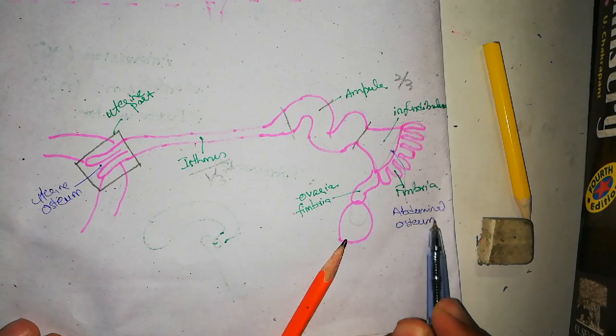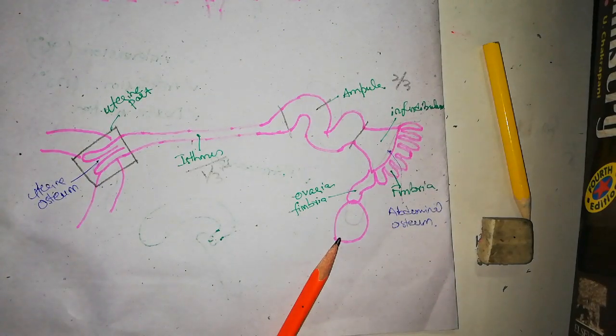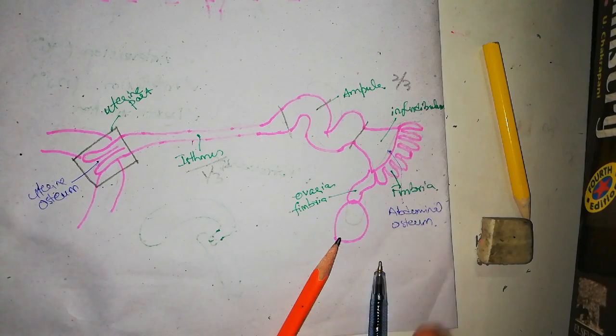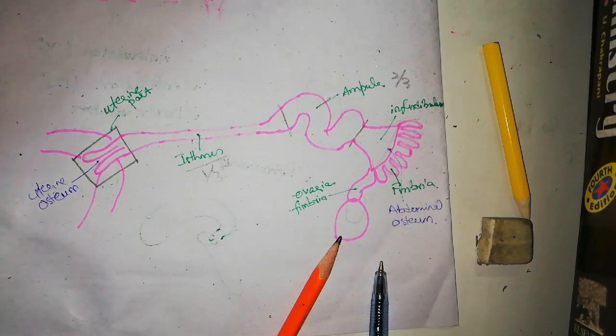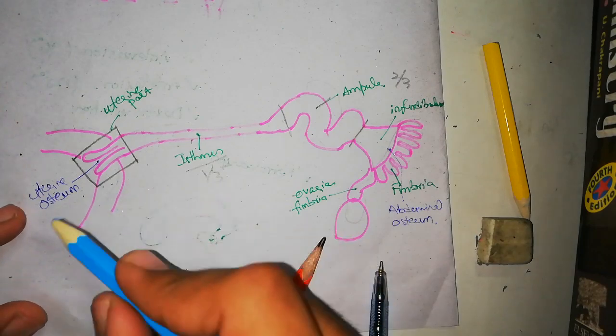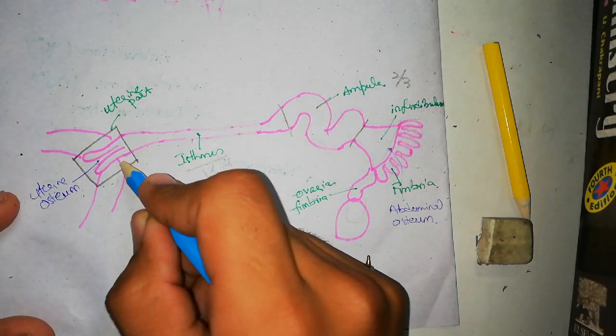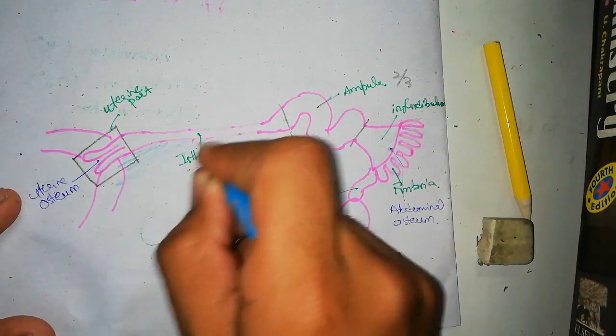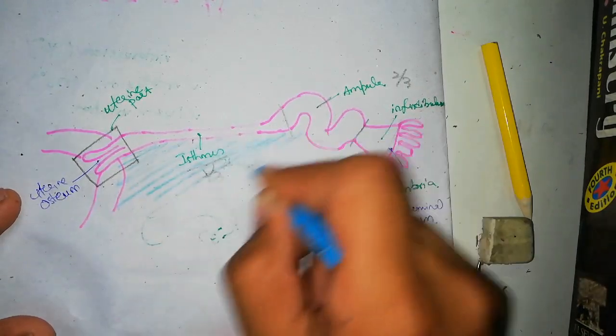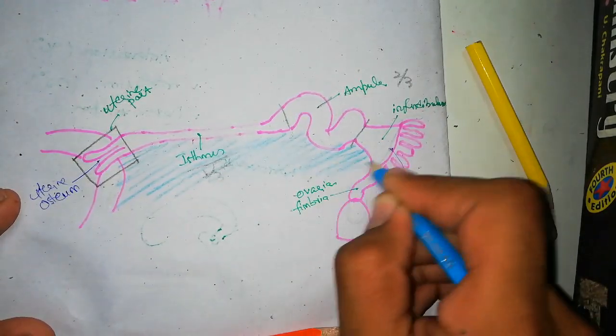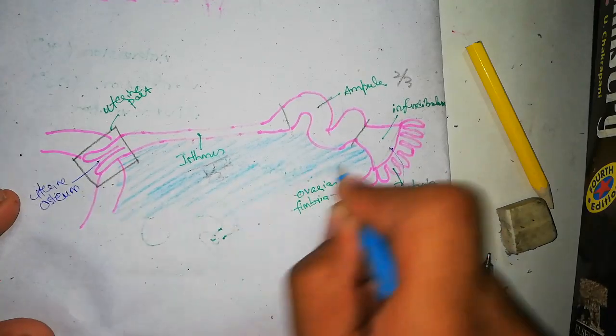So these were the parts of the fallopian tube. The fallopian tube has nothing else, actually. One thing to say is that it is present on the superior surface of the broad ligament of the uterus, which will be extending like this, and on the superior surface would be this fallopian tube.